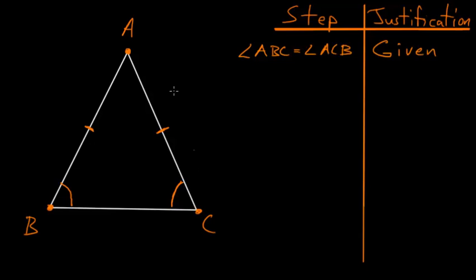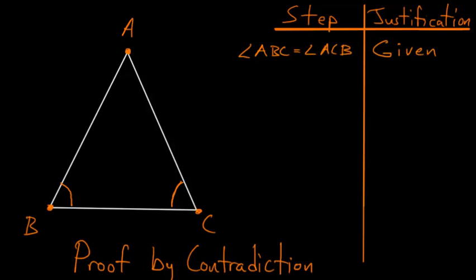The way that you could approach this proof is by using what's called a proof by contradiction. The main idea of this proof is that we're going to make an initial assumption and show that that assumption leads to logical contradictions.